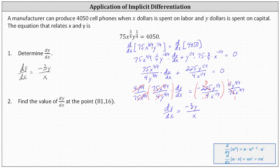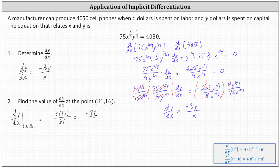Now we can determine dy/dx at the point (81, 16) by substituting 81 for x and 16 for y. This gives us negative three times 16 divided by 81, which equals negative 48 over 81. There is a common factor of three between 48 and 81, so dy/dx at the point (81, 16) is equal to negative 16 over 27.